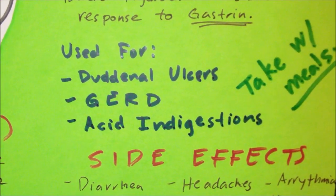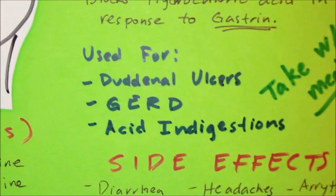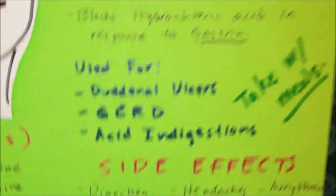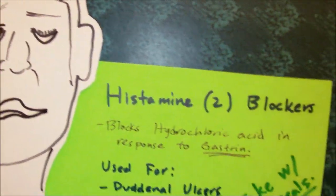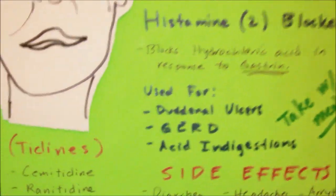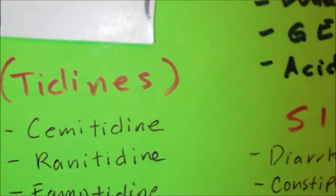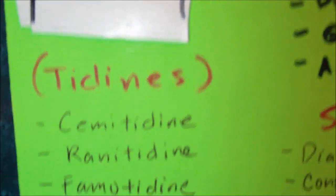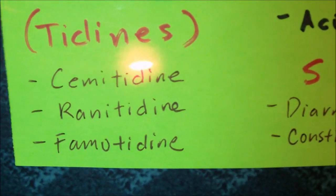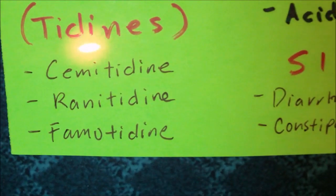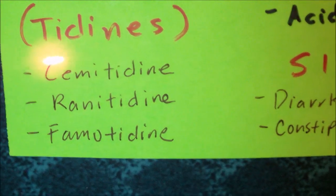An easy way to remember H2 blocker drugs is to remember that they usually have the suffix ending of "-tidine". So the most commonly used H2 blockers include cimetidine, ranitidine, and famotidine.